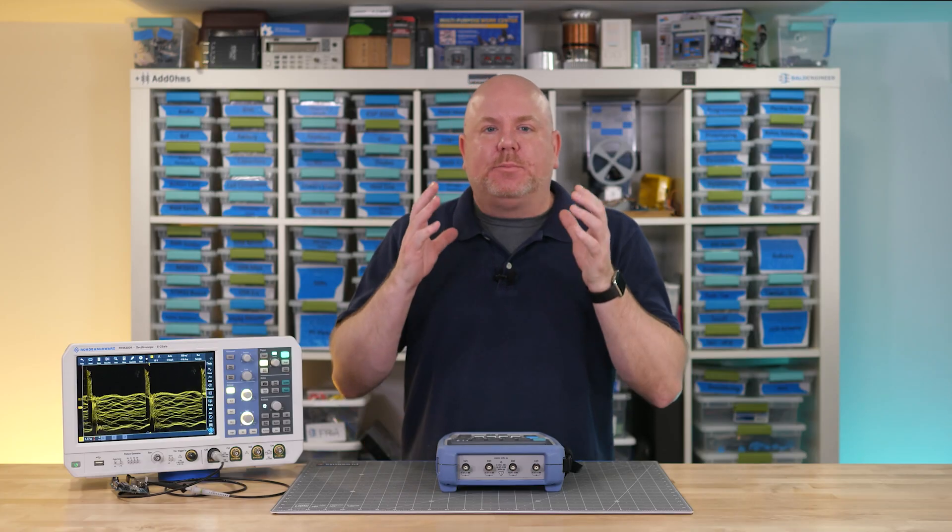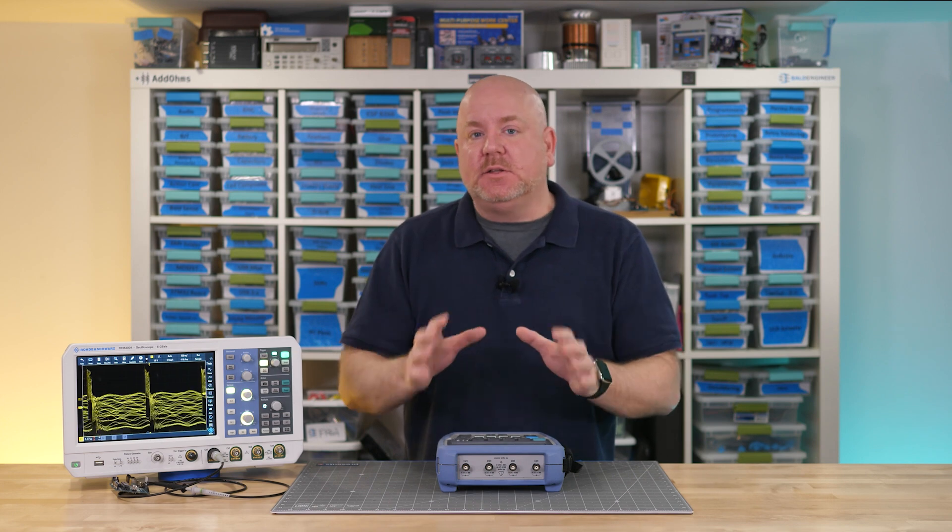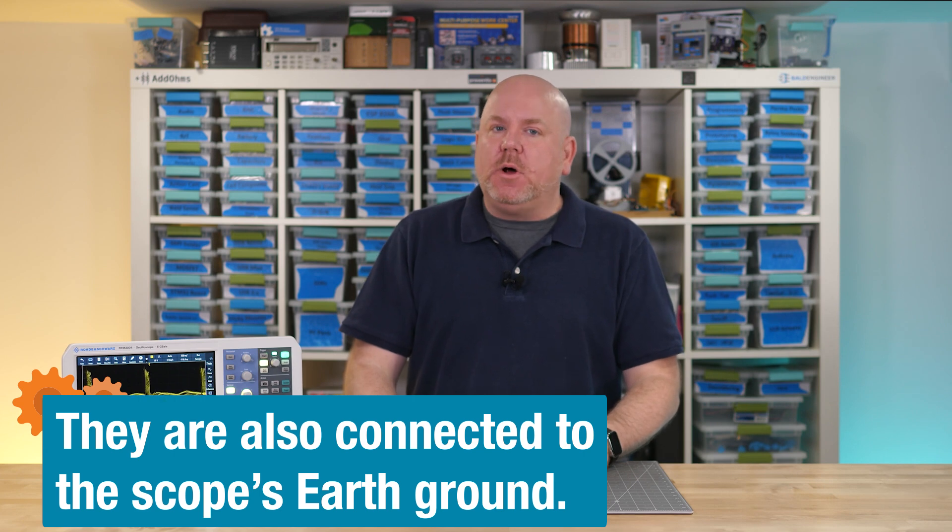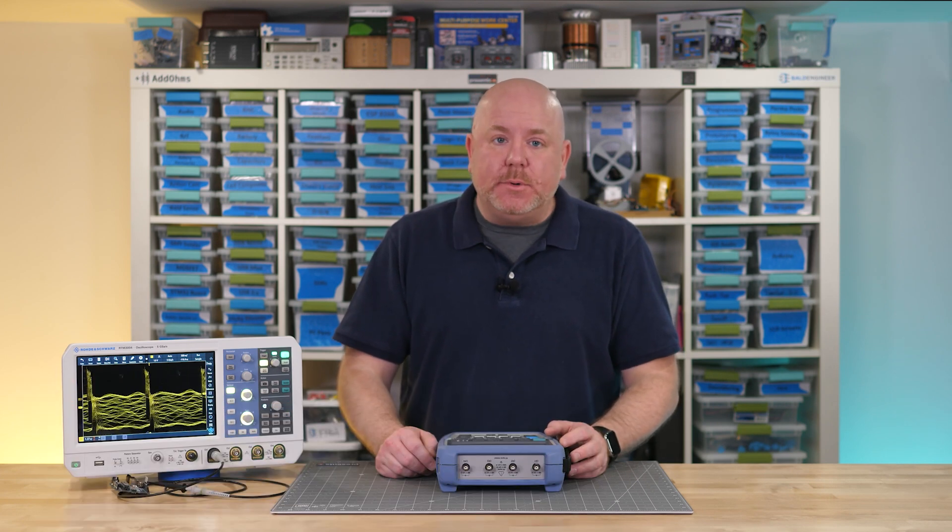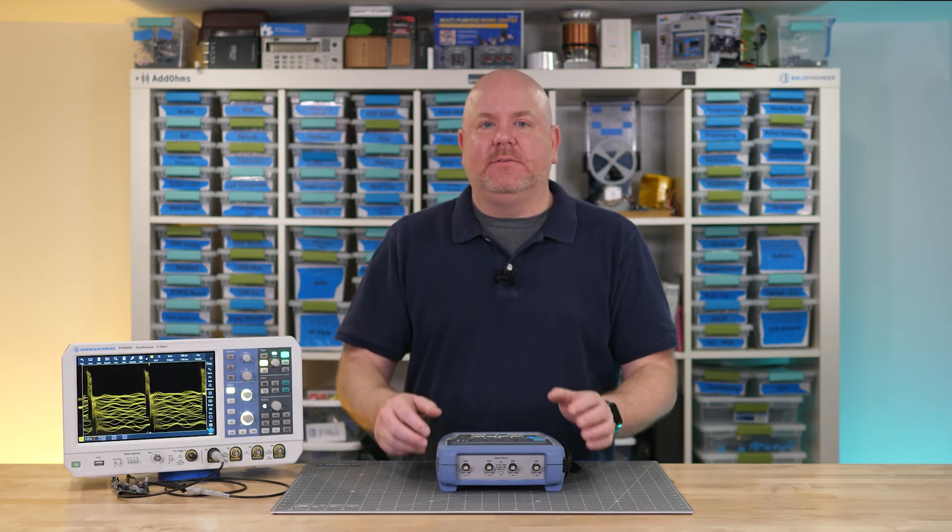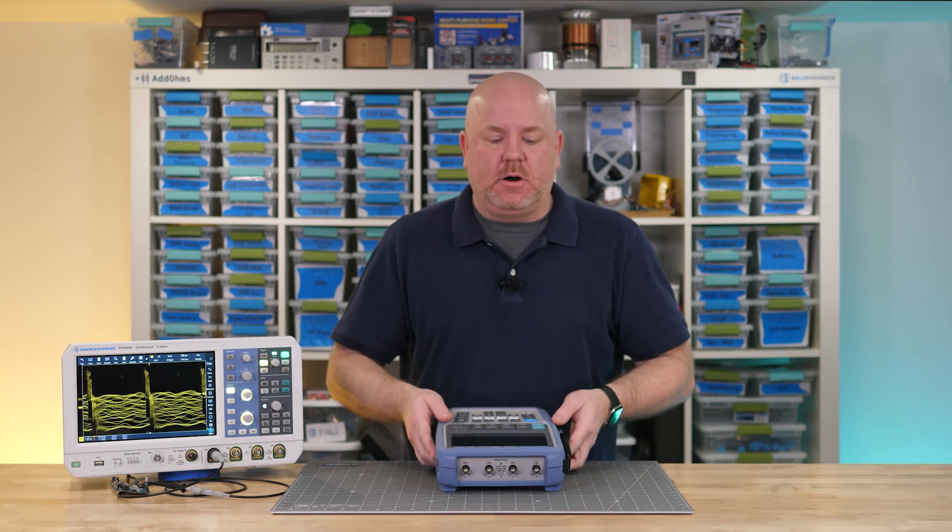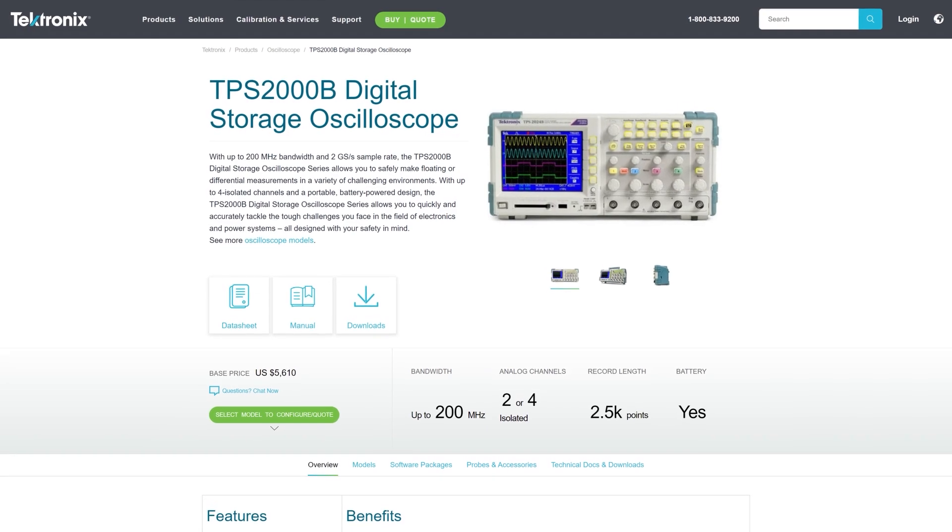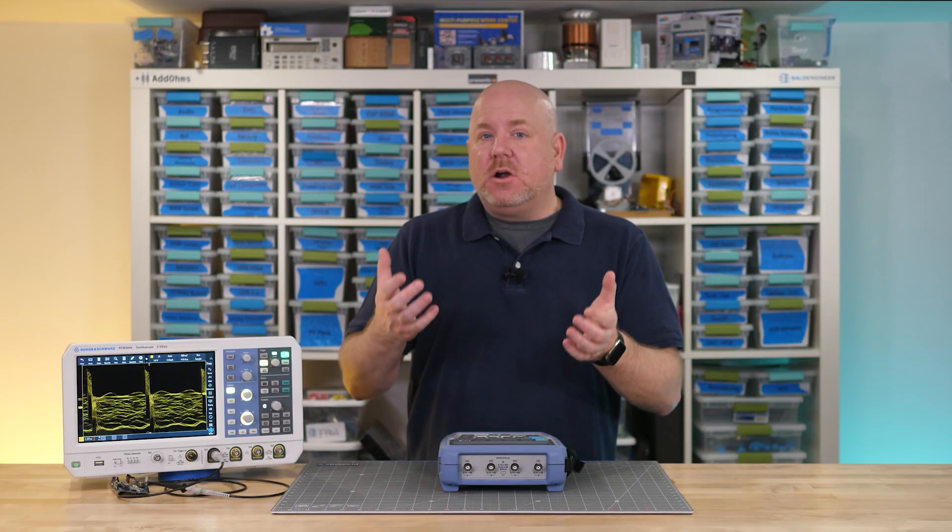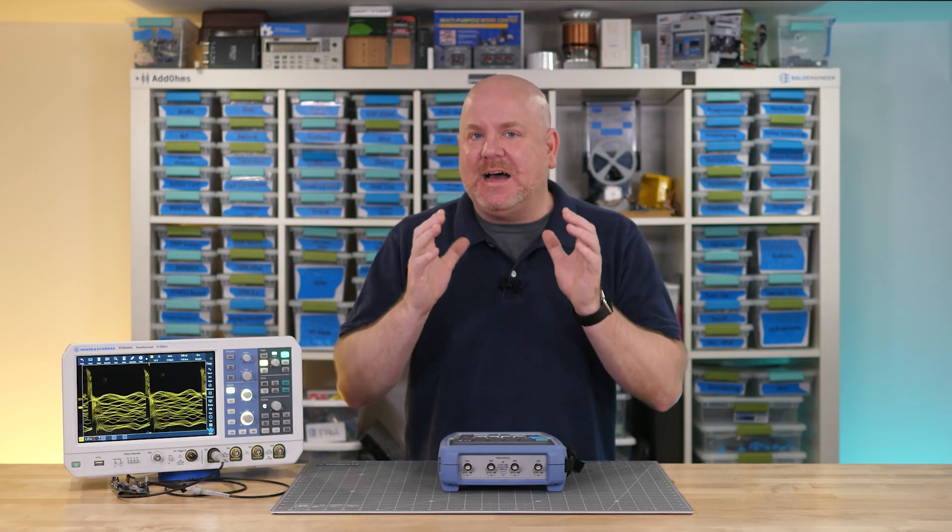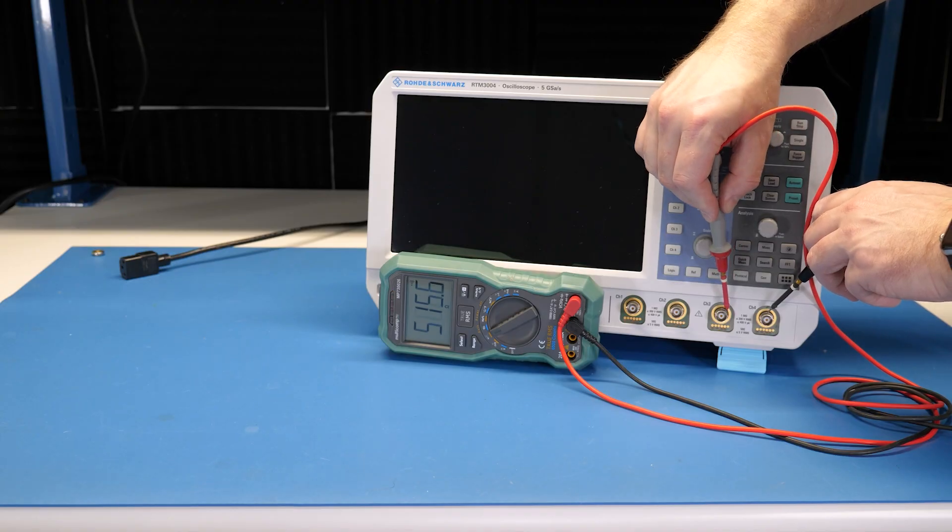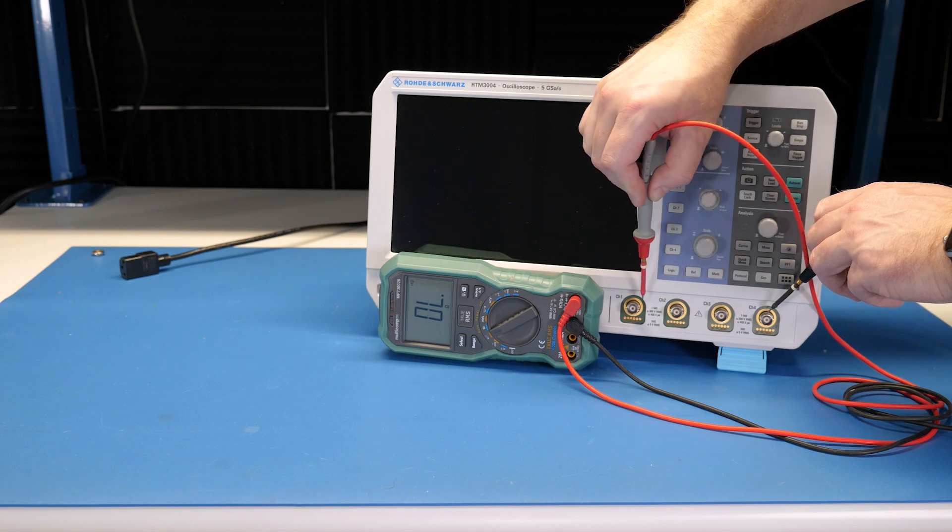By the way I should probably mention that most oscilloscopes have the ground connections on their BNCs connected together. However there are a small number of models with isolated inputs which are isolated from each other. Two examples are this Rohde & Schwarz RTH and Tektronix has the TPS 2000. Chances are your oscilloscope is not isolated. To check make sure that the scope is powered down before you do the DMM measurement I showed at the beginning of the video.